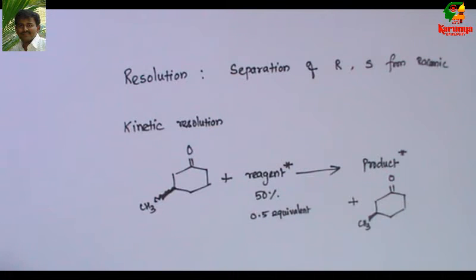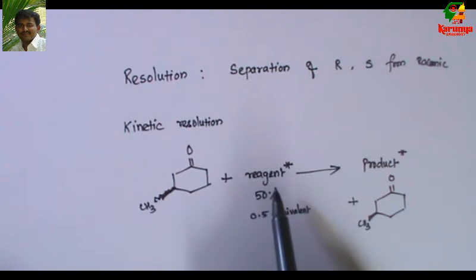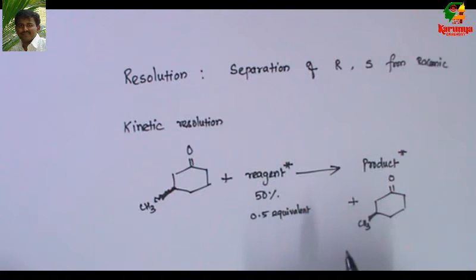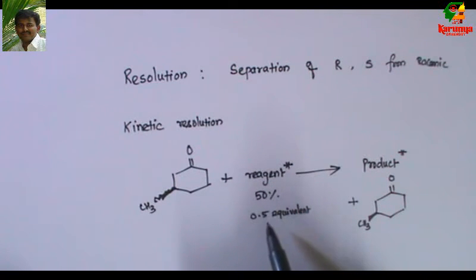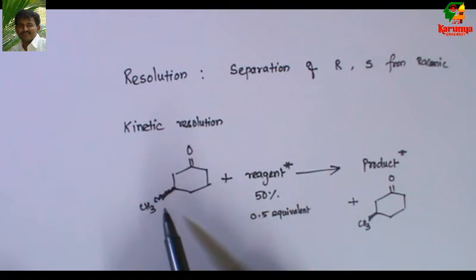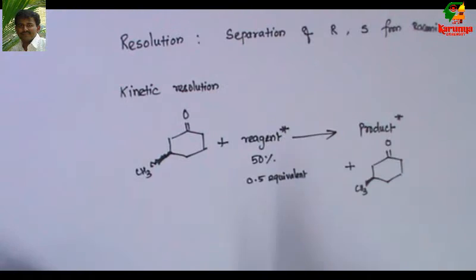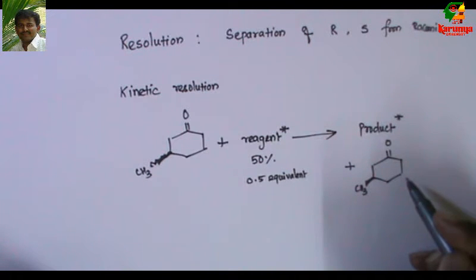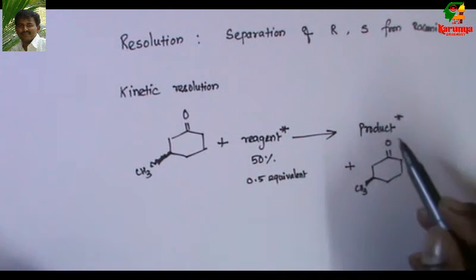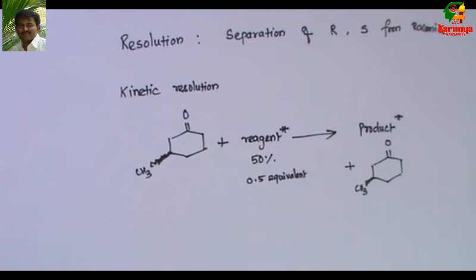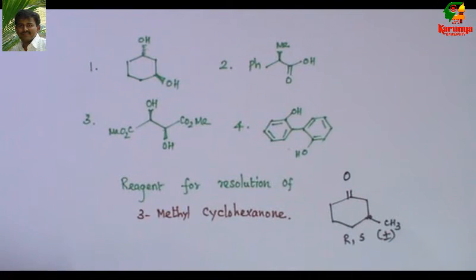The remaining will be optically pure. One enantiomer is more reactive towards the chiral reagent and the other one is less reactive. Since we have added only 0.5 equivalents of the chiral reagent, the highly reactive isomer forms the product. You can then separate them by column chromatography since they are entirely different compounds, and you can get the pure compound.